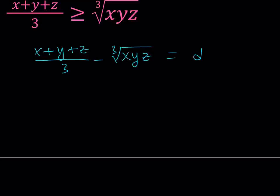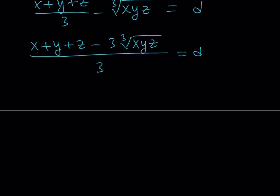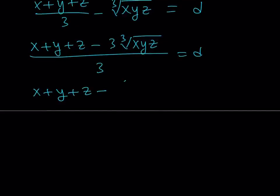Making a common denominator gives us X plus Y plus Z minus three times the cube root of XYZ, all over three, equal to D. To get rid of the fraction we multiply both sides by three: X plus Y plus Z minus three times the cube root of XYZ equals three D.